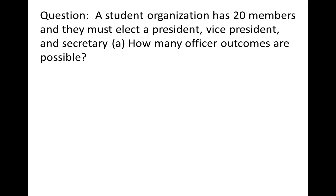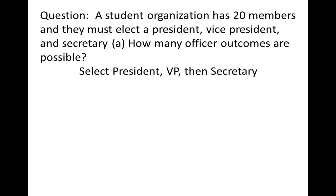We'll pick one office at a time: first the president, then the vice president, then the secretary. There are 20 choices for president. Assuming all officers must be different people, there are 19 choices for vice president, and 18 choices for secretary. Multiplying all that out, we get 6,840.